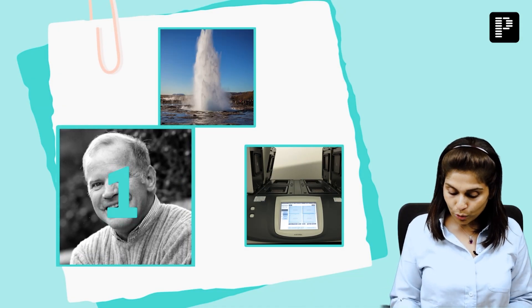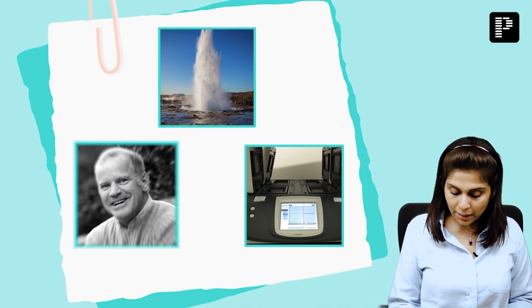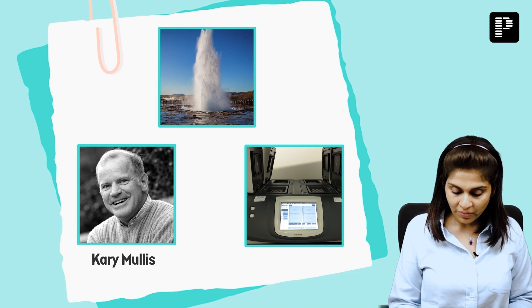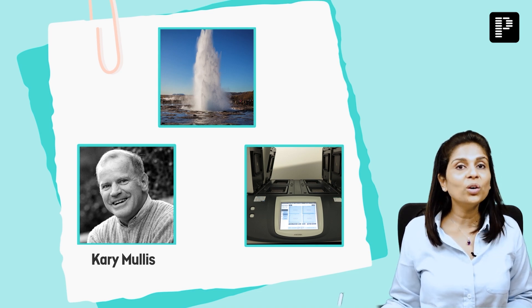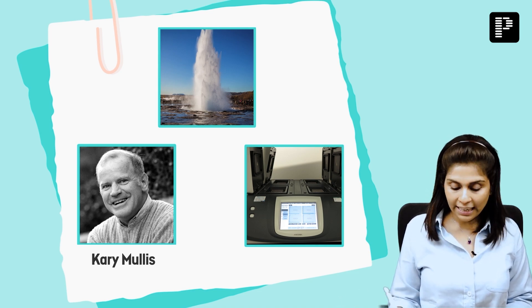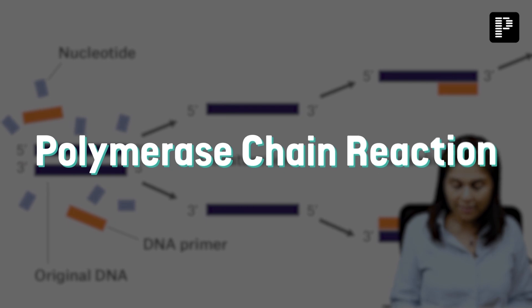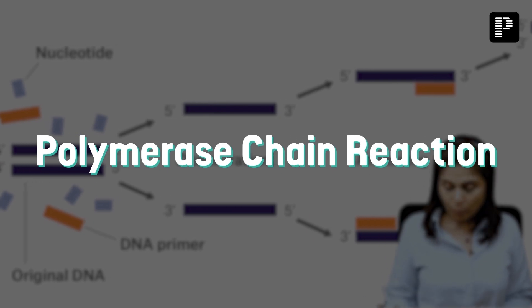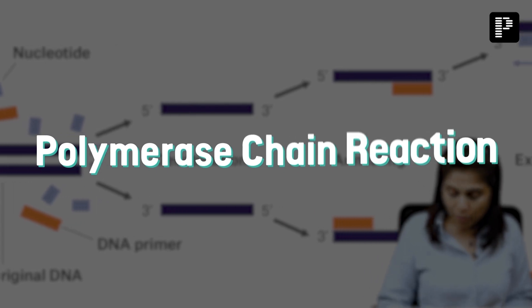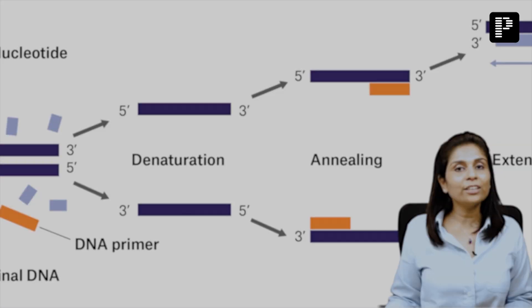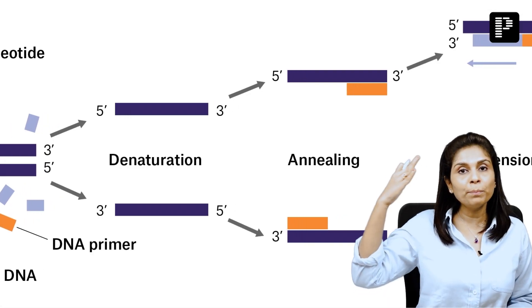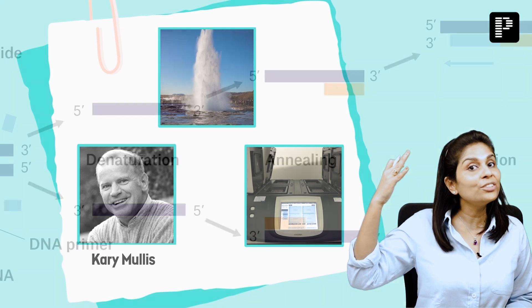Who is the person shown in the first image? He is Kary Mullis. What did he discover or invent? He invented polymerase chain reaction (PCR). The moment you hear PCR, you always think about temperature.